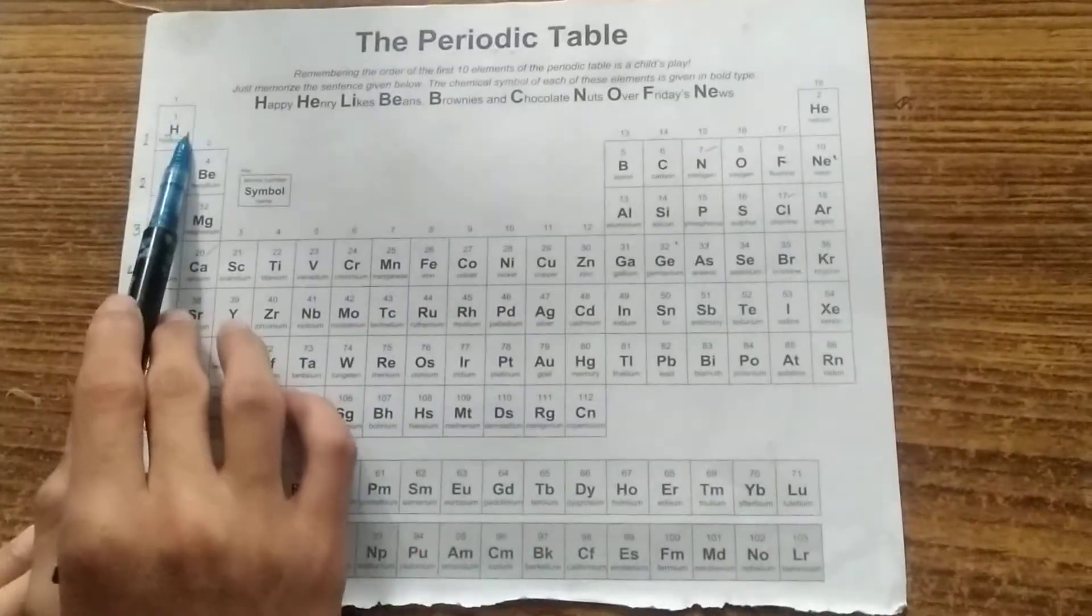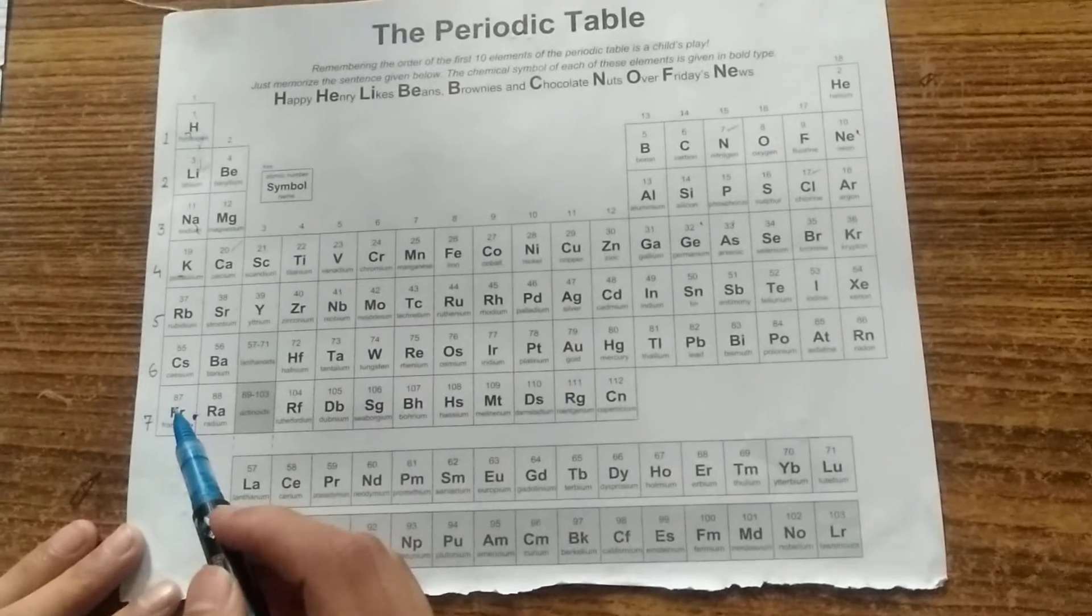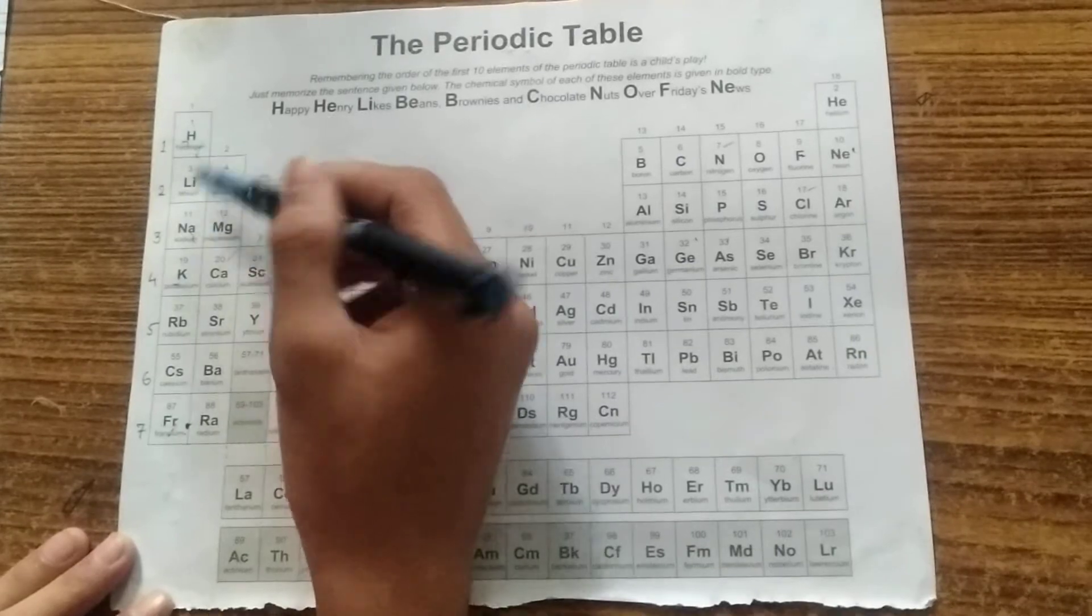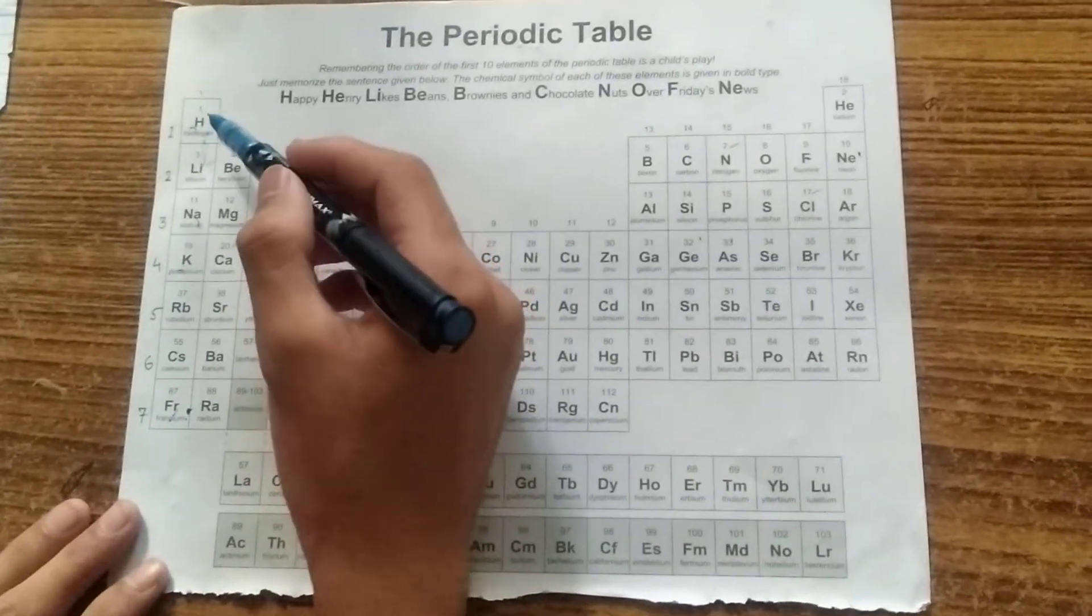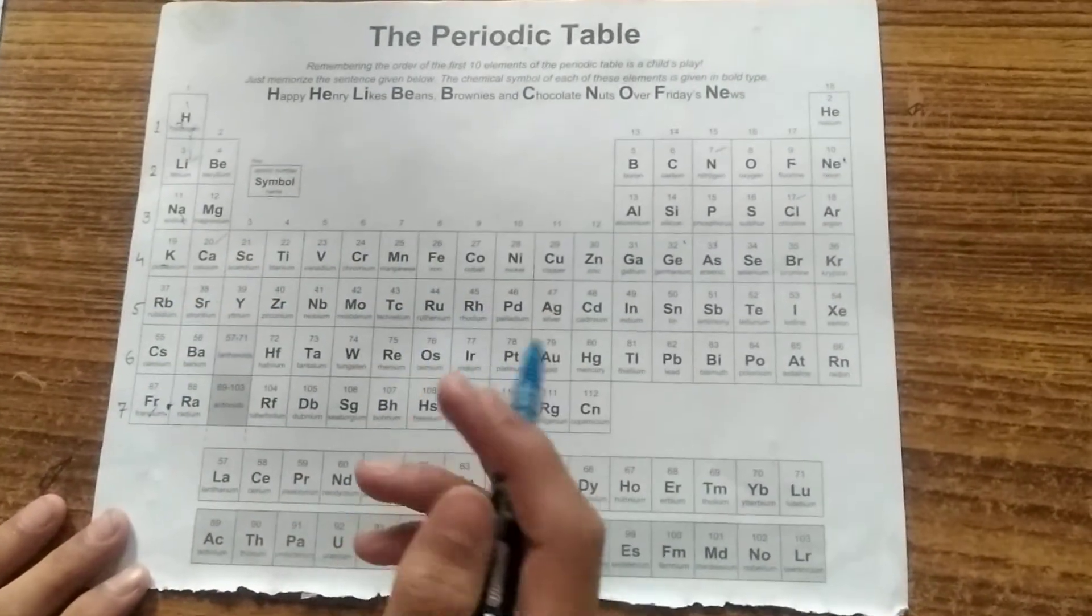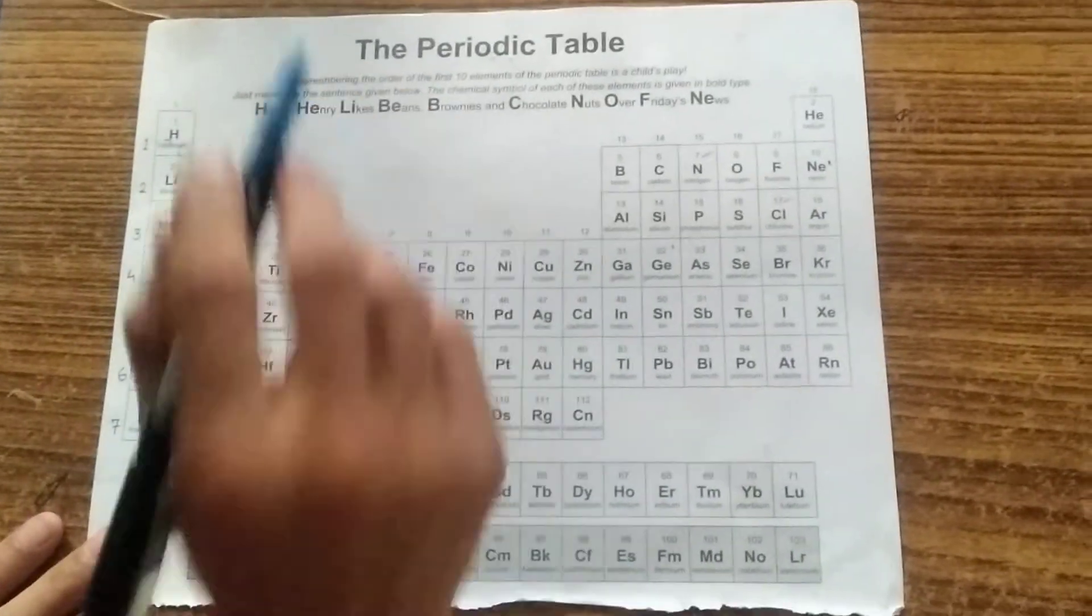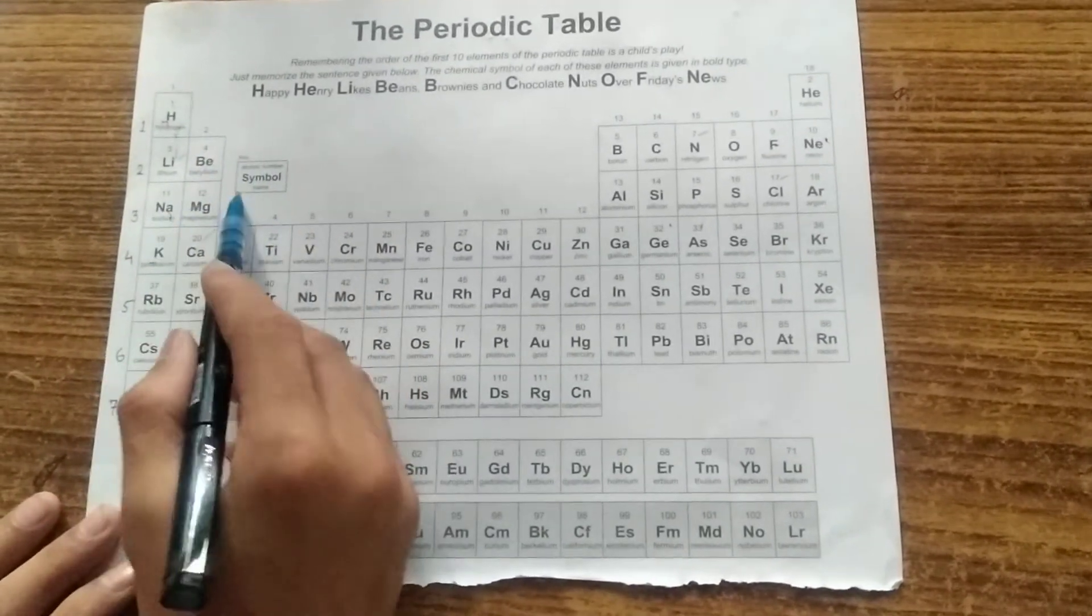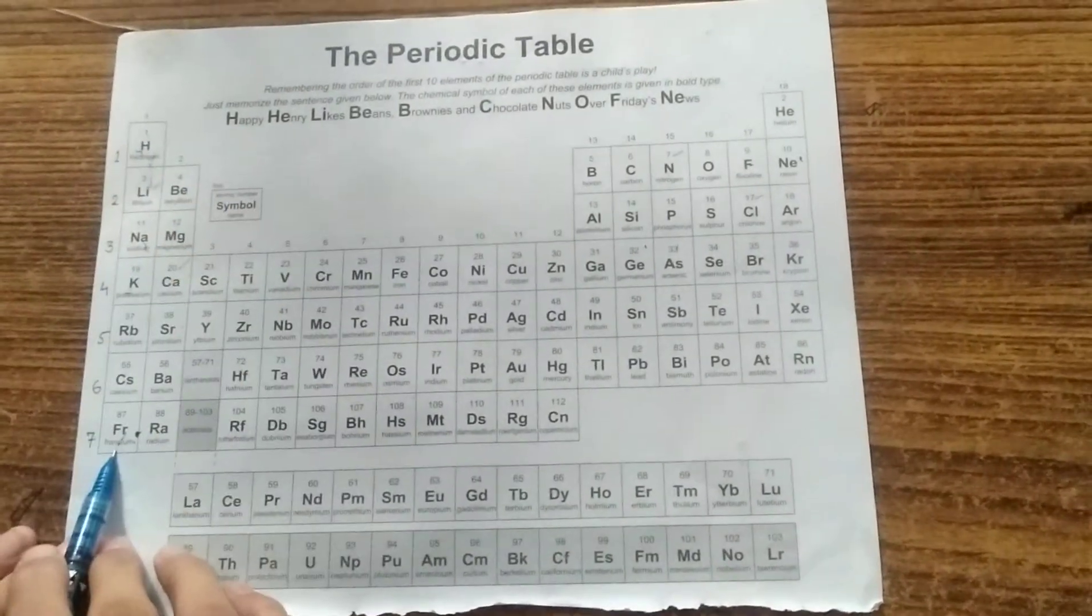Now as we move down in the group, the number of shells will increase. Shell will increase. And the radius will also increase. Therefore the size is also increasing as we move from up to down in a group. Now as we move down in the group, the metallic character also increases. And since the metallic character is increasing, the non-metallic character will obviously decrease. And valency will remain same. There is no change in the valency. For example, hydrogen has a valency of 1, lithium also 1, sodium also 1, and cesium also 1. All have the same valency in a group.